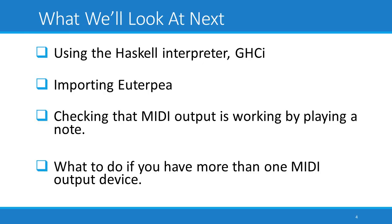Now we'll look at what's required to start up the Haskell interpreter, GHCI. Then we'll import Euterpia and check that its MIDI output is working by using the play function to play a note. Finally, we'll look at what to do if you have multiple output devices and the default output device on your operating system isn't the one that you want to send MIDI messages to.